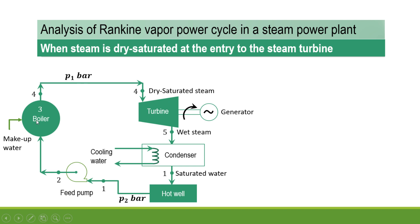In the boiler, the sensible and latent heat is supplied and we obtain dry saturated steam. So in our case, we are assuming the steam is dry saturated at the entry to the steam turbine. That dry saturated steam at boiler pressure P1 bar is allowed to expand in the turbine, and mechanical energy is generated. This rotating shaft is coupled with the generator shaft, converting mechanical energy into electrical energy.